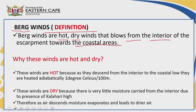Now, why are these winds hot and dry? You should expect that question in the examination. They are hot because as they descend from the interior towards the coastal area, they are heated adiabatically at one degree Celsius per 100 metres as they descend the mountain.